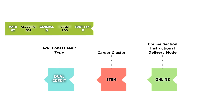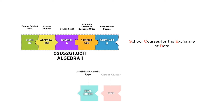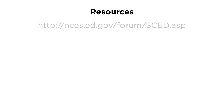These voluntary five-part preschool through high school SCED codes, combined with optional attributes, streamline course management and comparisons across school, district, and state levels.